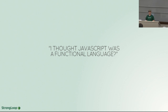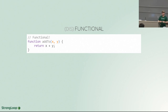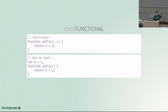I get this a lot: 'I thought JavaScript was a functional language.' Well, sort of, kind of. This add function is totally functional — I take in input and give out output. The definition of functional is that given the same input, you get the same output. A truly functional application has each function not changing the state of the world — it changes its inputs into its outputs. But if you're taking something outside of yourself and manipulating it, you are not being functional. This is not a functional add function.